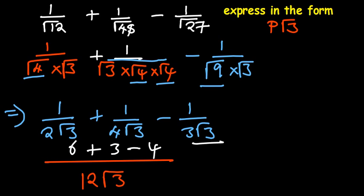Why am I ignoring root of 3? Because it's common, and it's already part of the denominator. So 6 plus 3, 9. 9 minus 4, that's 5. So I have 5 over 12 root 3.